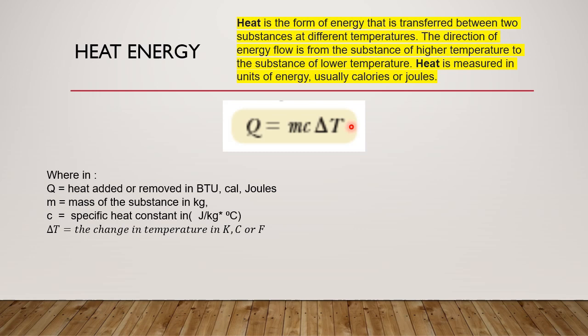Q is heat added or removed in BTU, calories, or joules. M equals the mass of the substance in kilograms. C is the specific heat constant in joules per kilogram per degree centigrade. Delta T is the change in temperature in kelvins, centigrade, or Fahrenheit.